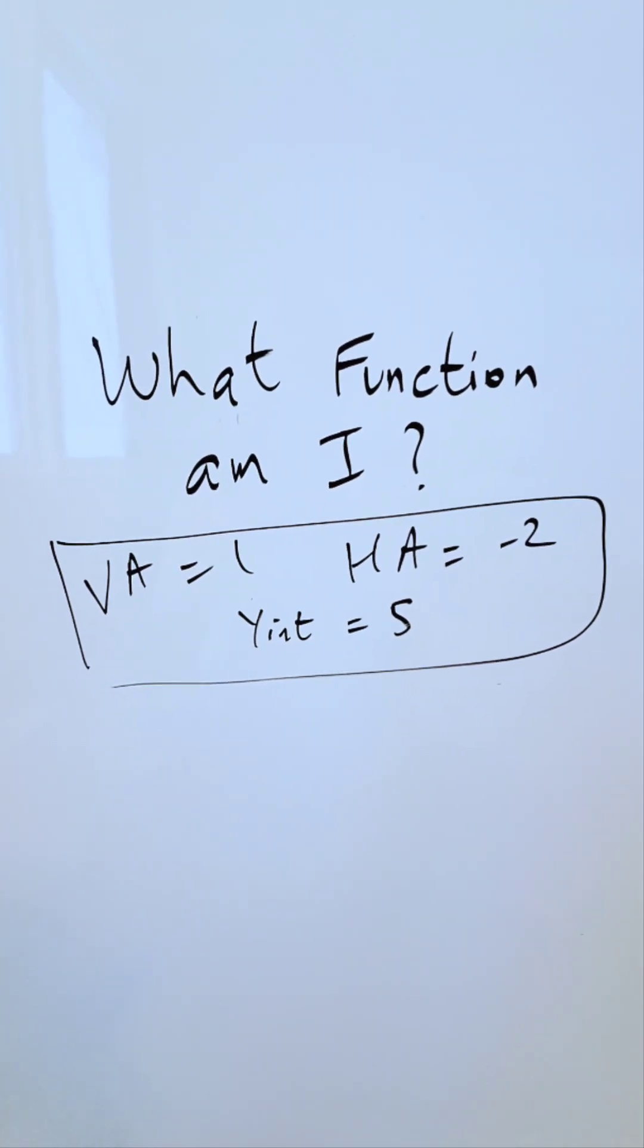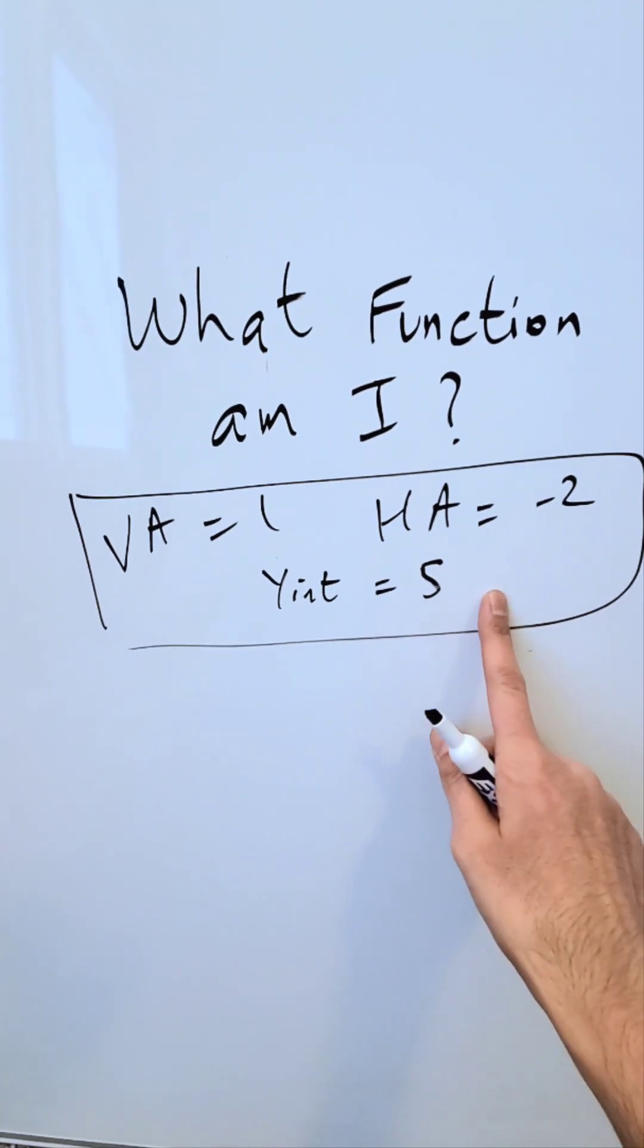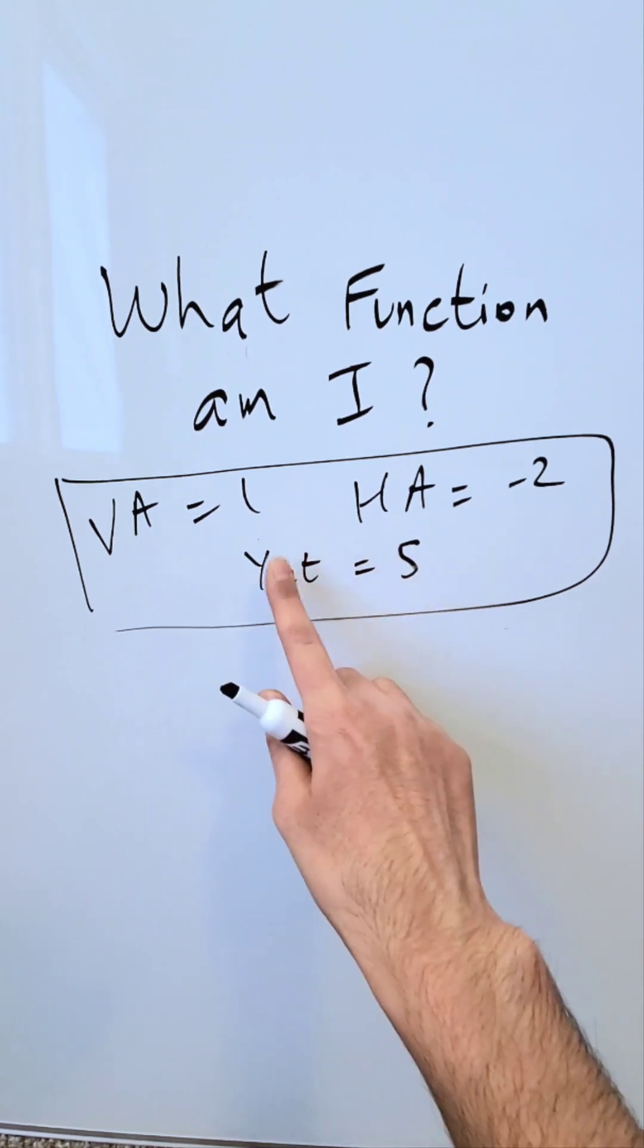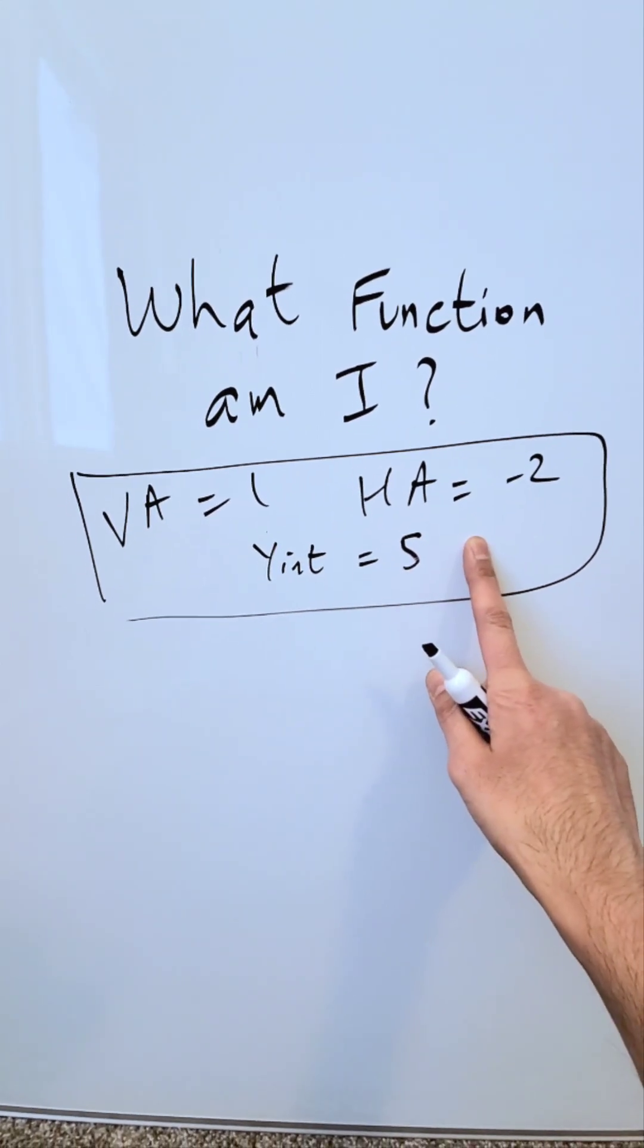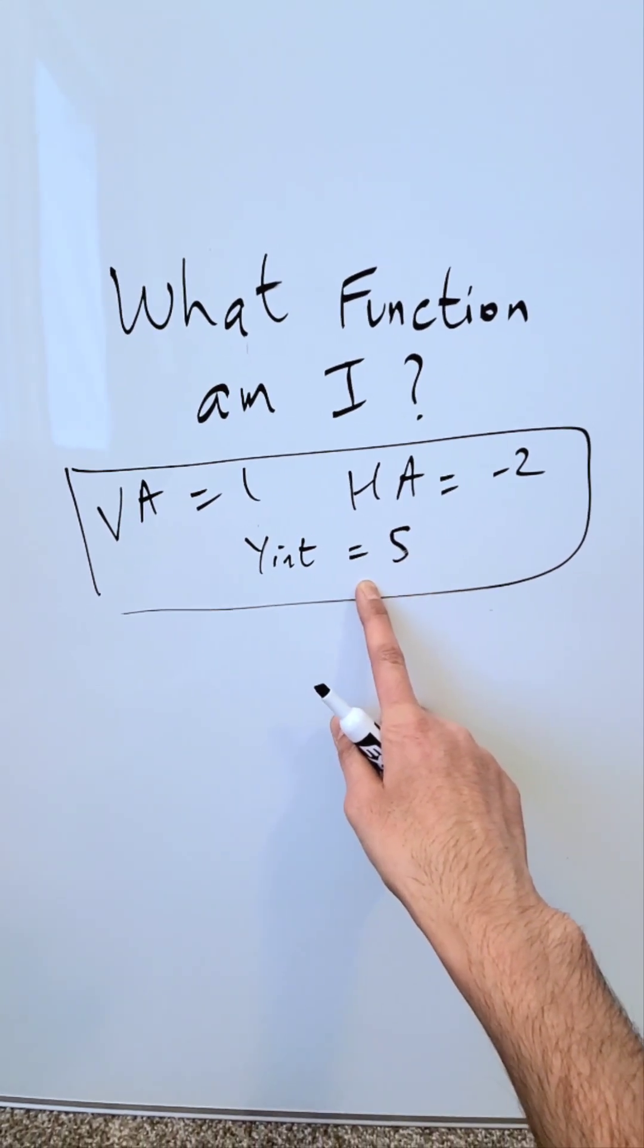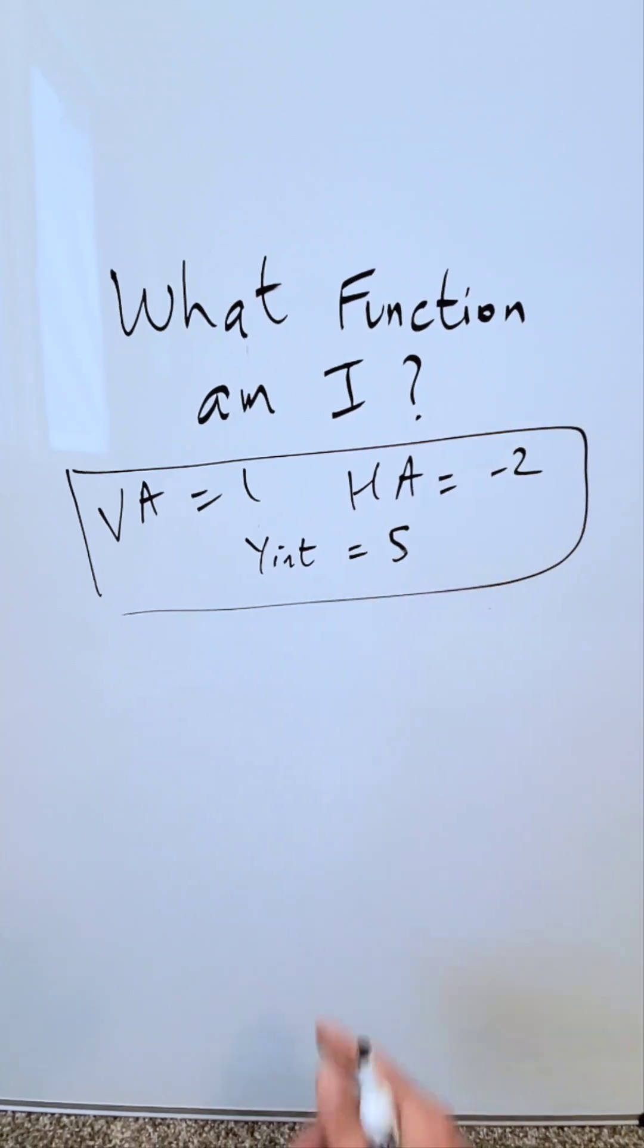Let's play a little game in math. What function am I if I'm given this information? Vertical asymptote is equal to 1, horizontal asymptote minus 2, and y-intercept 5. Given this information, what function can we be dealing with?